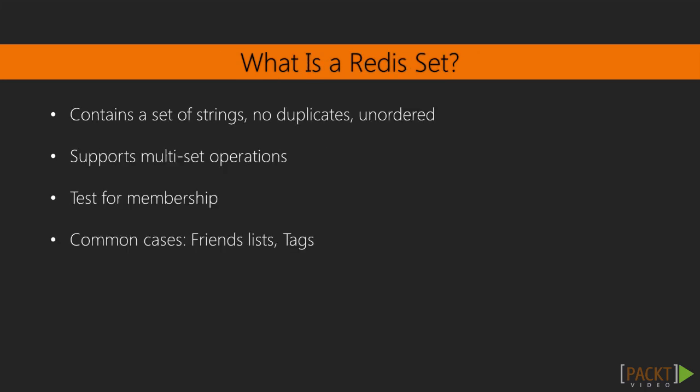The perfect structure for this exists in Redis as a set. What is a set? Well, you can think of it as a bag of strings. The strings in the bag have no order, and the bag will contain no duplicates no matter how many times you add the same string to it.